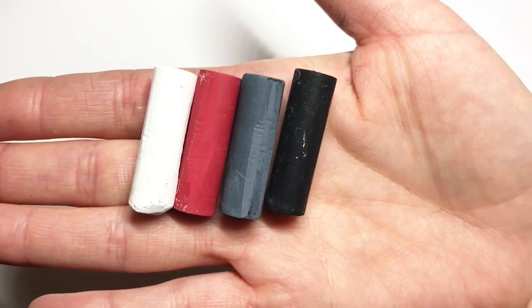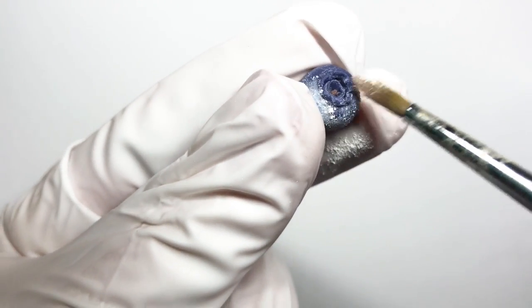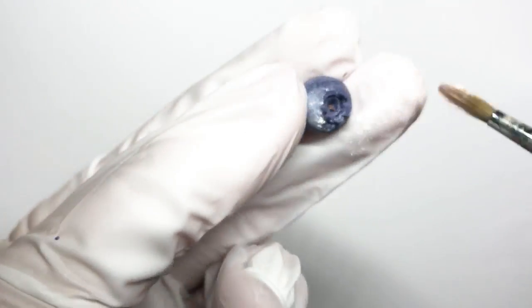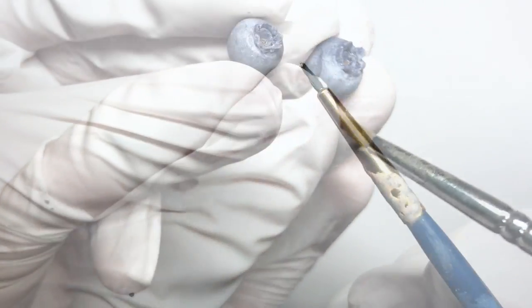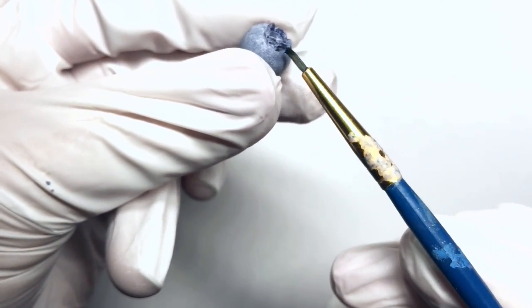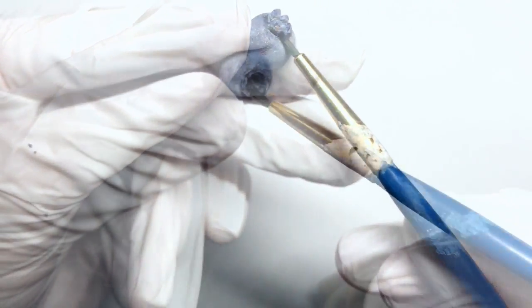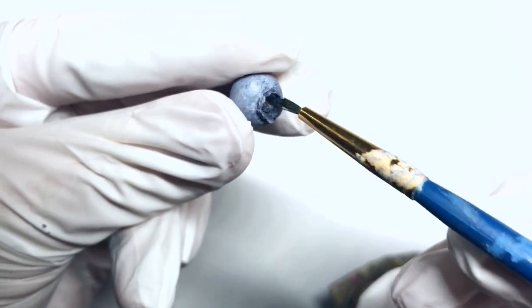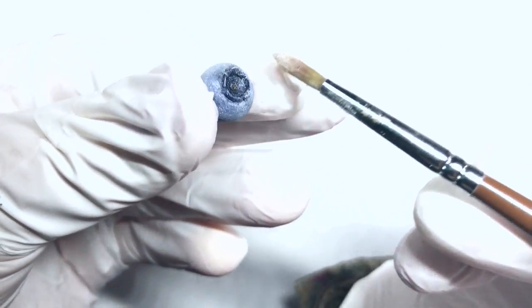Color the blueberry with white, red, bluish-gray, and black pastels. Shave the pastels with your X-Acto knife and use a dry brush to apply. Add a good amount of white all over the blueberry. Use black pastel on the edge of the crown and also on the interior of the crown. And top that off with a little more white.